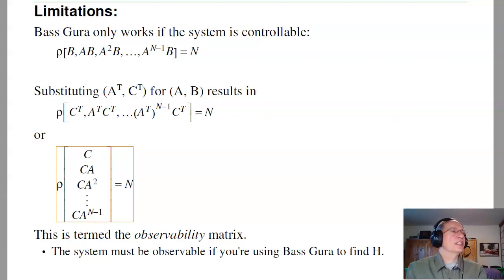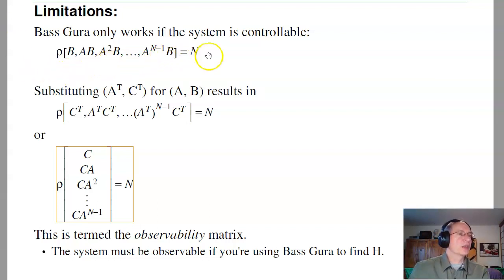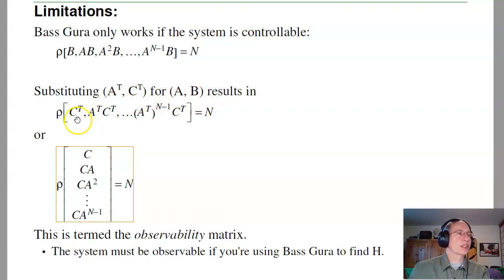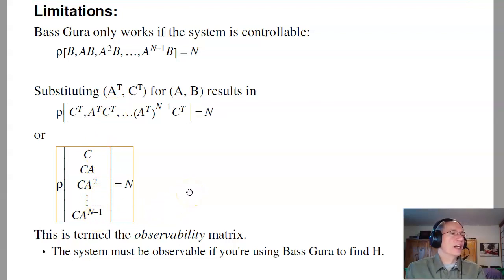Now there are limitations. Ackermann's formula only works if the system is controllable — meaning the rank of the controllability matrix [B, AB, A²B, ..., A^(n-1)B] is n. Substituting A-transpose and C-transpose for A and B means I can only design my observer if the rank of [C-transpose, A-transpose C-transpose, ...] is n. Transposing this gives you the observability matrix [C; CA; CA²; ...]. So not surprisingly, I can only arbitrarily place the poles for a full-order observer if the system is observable.